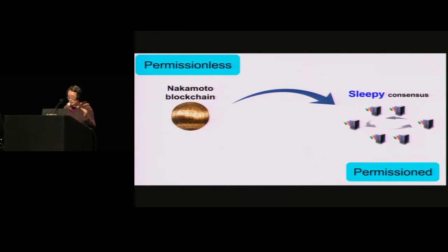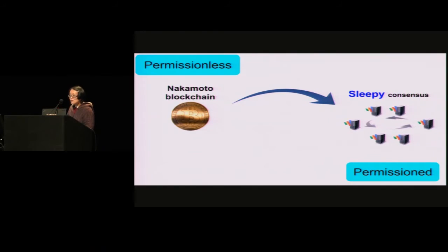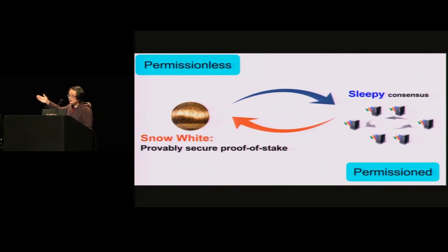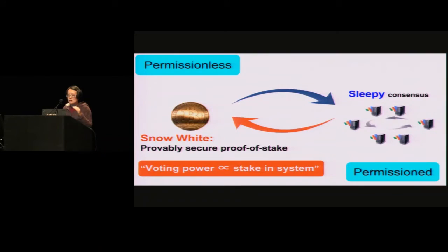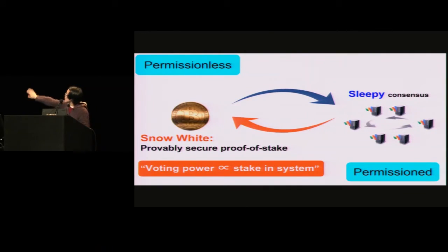To quickly summarize, I've talked about how to take the Nakamoto blockchain protocol and remove the proof of work in a secure way such that we get an instance of permissioned consensus. We can achieve new robustness properties that were not possible with classical consensus protocols. It would also be nice to have a permissionless protocol — and in fact, we can do this. We can take Sleepy and recast it to the permissionless setting by doing proof of stake. In proof of work, your voting power is proportional to your computational power, whereas in proof of stake, your voting power is proportional to your stake in the system. We also have a paper on the proof of stake protocol called Snow White, which is up on ePrint.